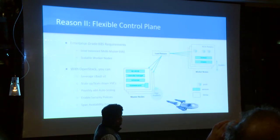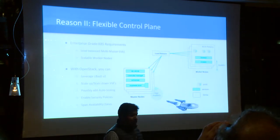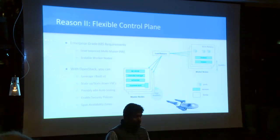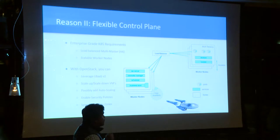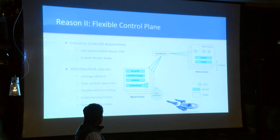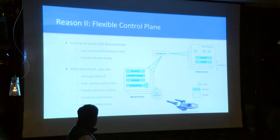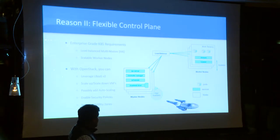Reason number two: if you are looking to deploy a production-grade Kubernetes cluster, chances are high that you really want it to be highly available. You basically put a load balancer in front of it and want it to be really scalable. With OpenStack, you could leverage features such as Neutron LBAS or autoscaling to set up a great architecture.